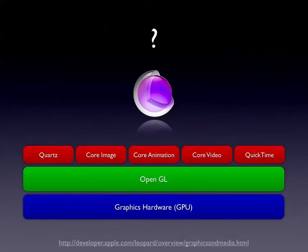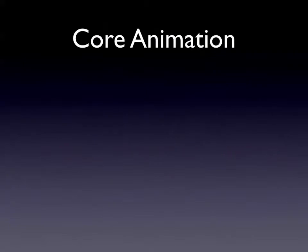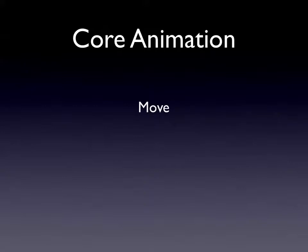What I'm going to talk about is how we can use OpenGL as an interface to the GPU in order to make what could potentially be cross-platform as well as highly optimized code. Core animation allows you to do certain special effects — like move, rotate, and scale. This is using Keynote and every single one of those animations was in fact using core animation.